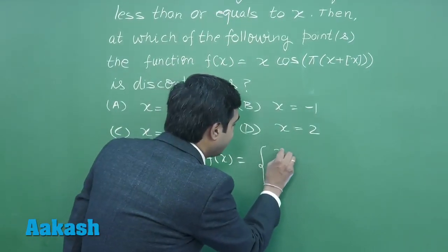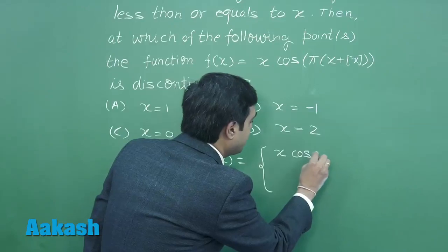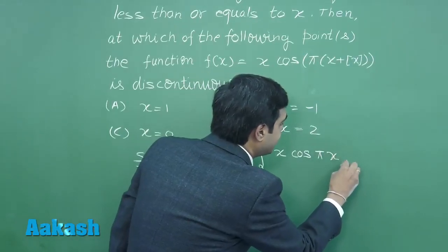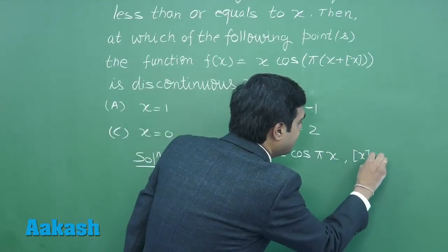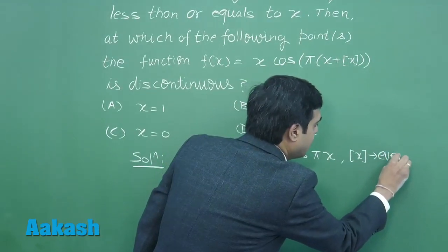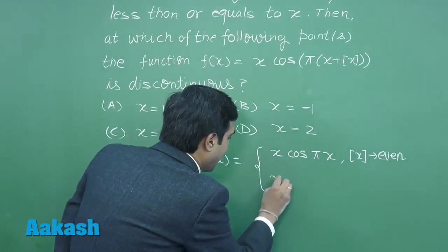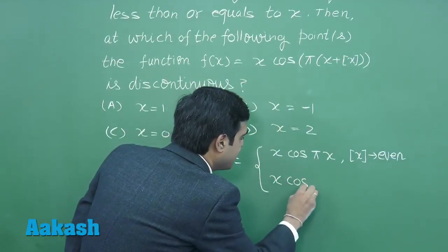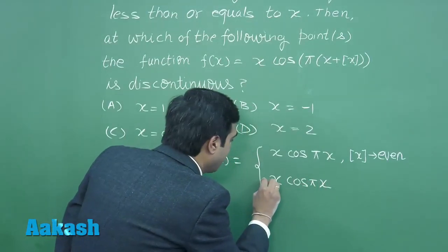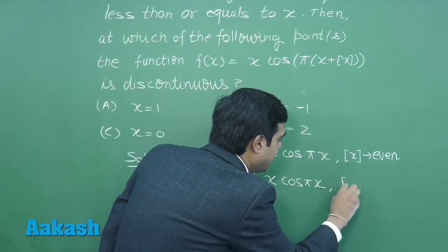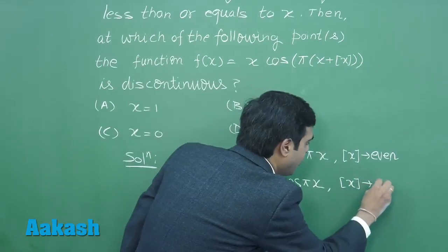So we can write it as x cos(pi x) when greatest integer x is even, and x cos(pi x) with minus sign when greatest integer x is odd.